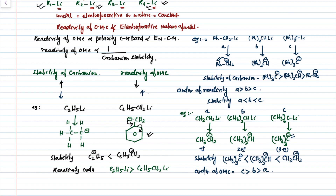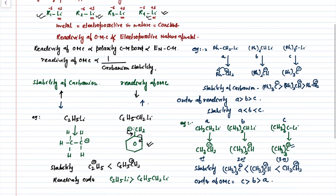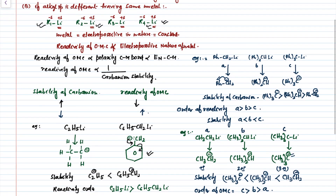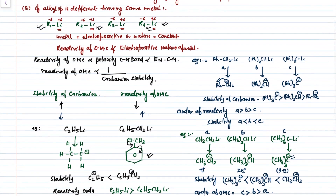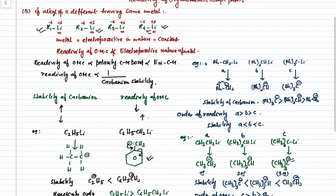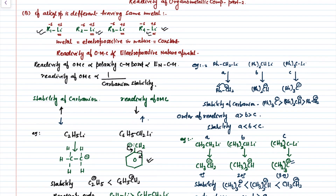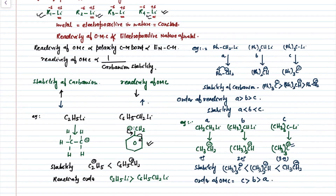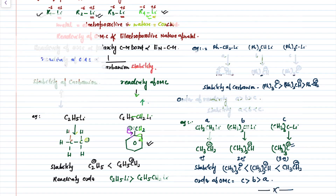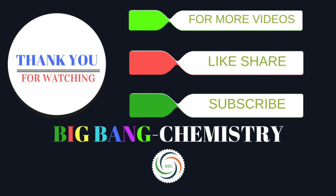By these three examples, I hope everyone understood how the reactivity of organometallic compounds is governed by the stability of the hydrocarbon part — the carbanion. Thank you very much. For more videos, please subscribe to my channel and share.